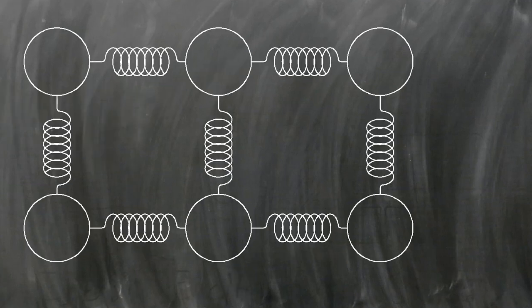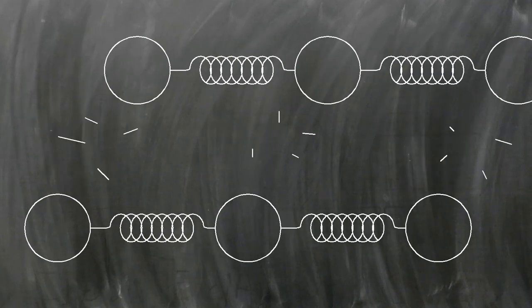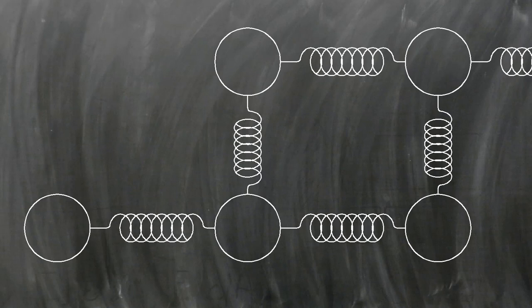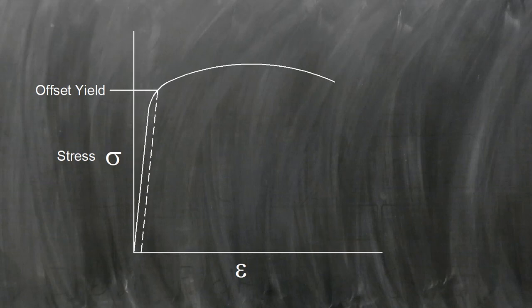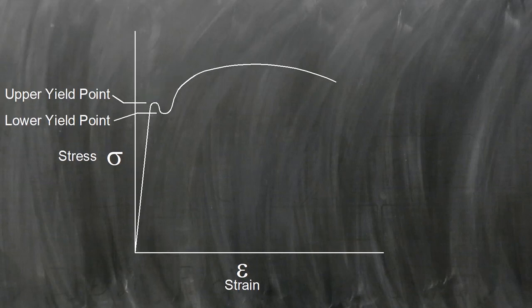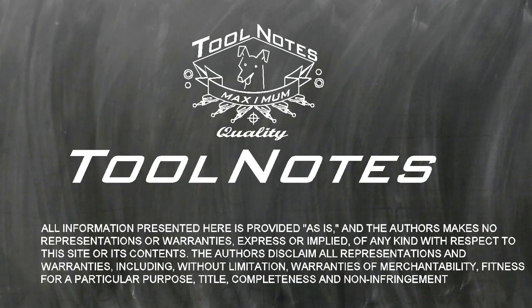So, the yield point occurs at the level of stress that permanently deforms the metal. Often, the offset yield is used because it can be found using a reliable, repeatable method. Some materials have an upper and lower yield point, and usually the lower of the two is used for making design decisions.